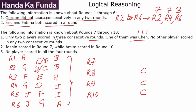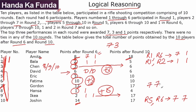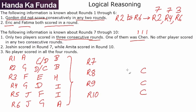There is one more player who scored in 3 consecutive rounds and must have gotten some 7s or 3s. Ikea is moving up by 15 points total — the only way to score 15 in 3 rounds is 7, 7 and 1. Ikea can score 1 only in round 7 because all other positions are occupied. That means in rounds 8 and 9, Ikea must have scored a 7. Then we are told Joshin scored in round 7, going from 14 to 17, so Joshin gets a 3 in round 7.